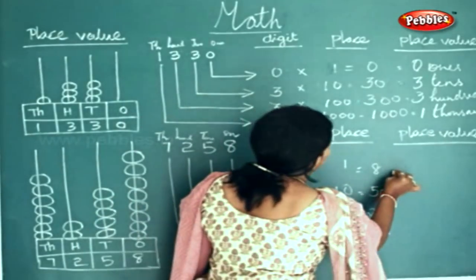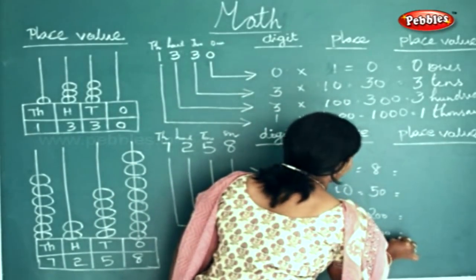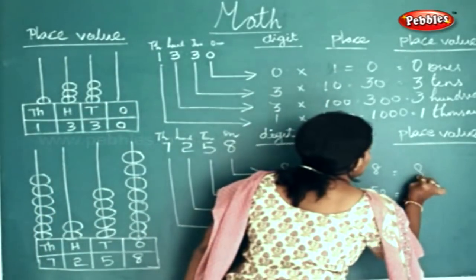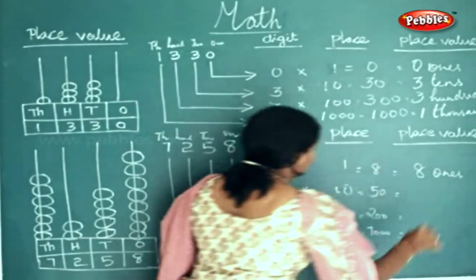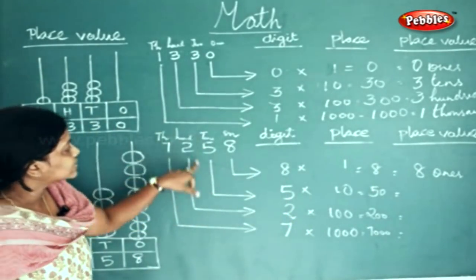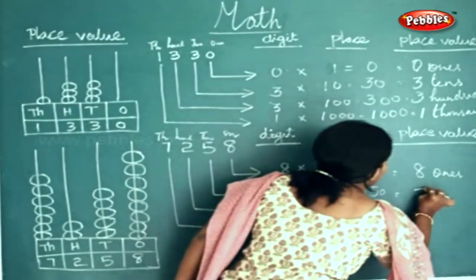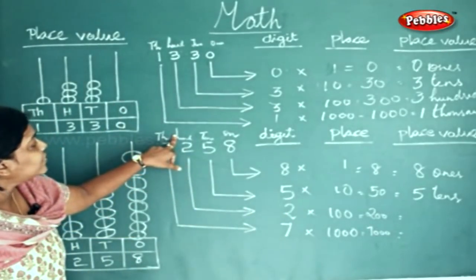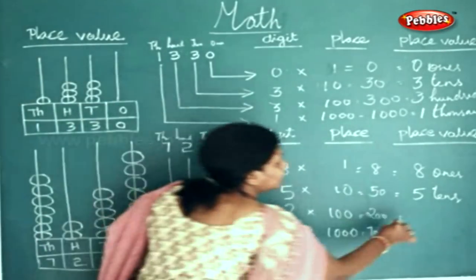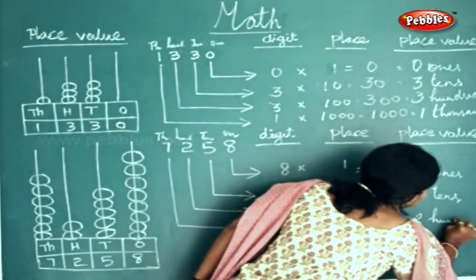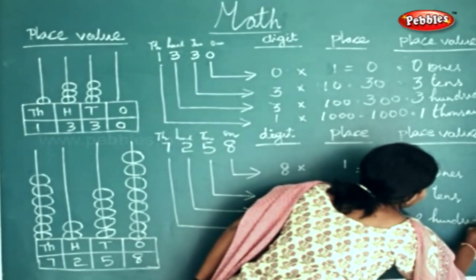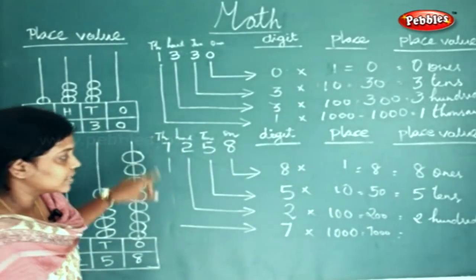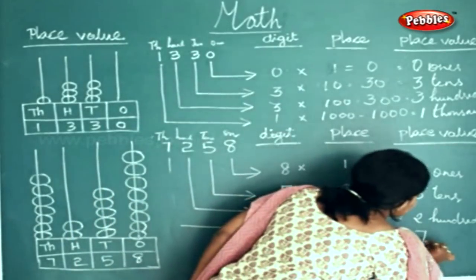Now we will write the place value for these. Eight — where do you find it? In the ones place. So you will write it as eight ones. This five is in your tens place, so you will write it as five tens. This two is in your hundreds place, so you will write it as two hundreds. And this seven lies in your thousands place, so we will write this as seven thousands.